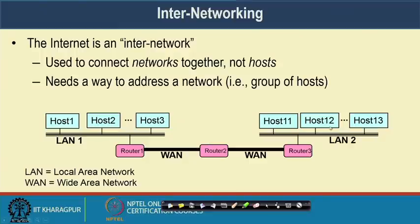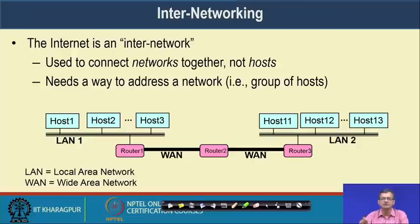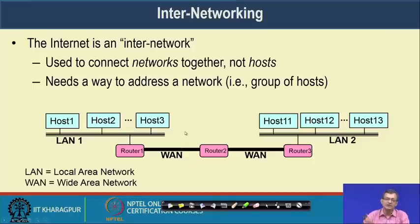A typical setup has one LAN with some hosts, another LAN with other hosts, and a bunch of routers in between — sometimes called an internetwork or wide area network. There can be 1 to n routers connecting the networks. Each router has multiple interfaces, sometimes represented as serial ports numbered like serial 0/1, 0/2, etc., each connecting to another router or network.